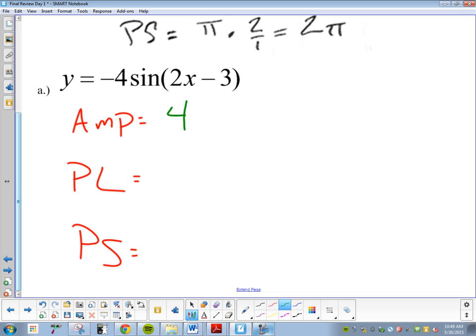The next question is period length. When we talk about period length, what is the basic period length of a sine or a cosine graph? We start off with two pi. Is the period length going to change on this one?